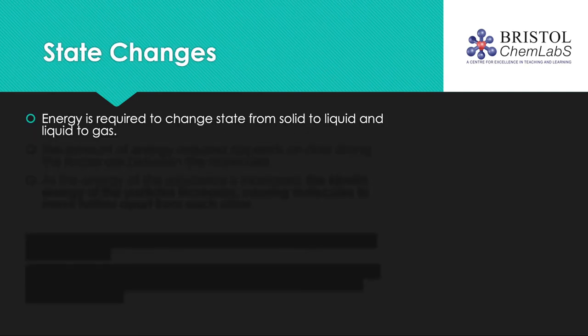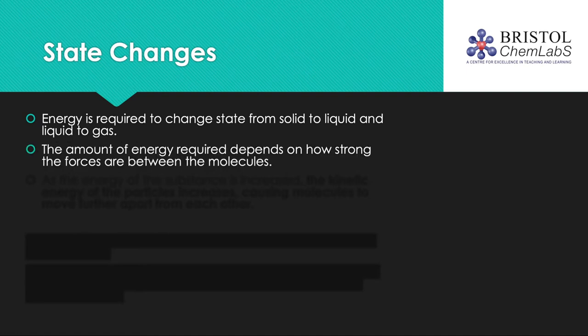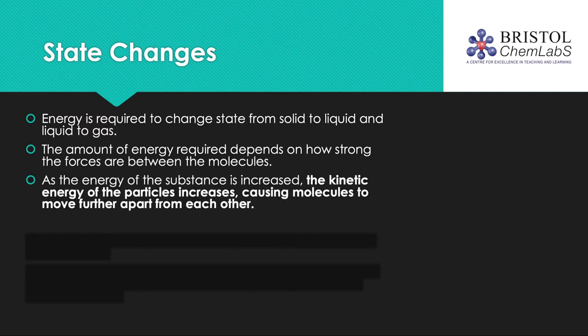Energy is absorbed when changing state from solid to liquid and liquid to gas, and released when changing state from gas to liquid and liquid to solid. The amount of energy required to change state depends on how strong the forces are between the molecules in the substance — the stronger the intermolecular forces in the liquid, the more energy is required to break them to form the gas. As the energy of a substance is increased, the kinetic energy of the particles increases, causing molecules to expand.